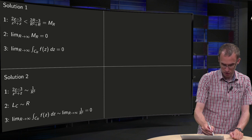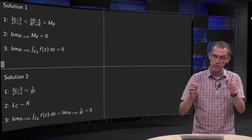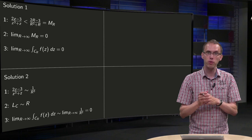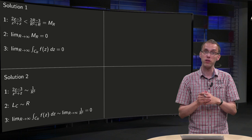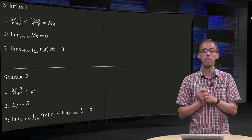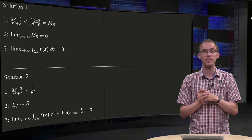the function behaves like 1 over R squared, the length of the interval behaves like R, and we multiply the 2 and see that our integral behaves like 1 over R, which goes in the limit to 0.